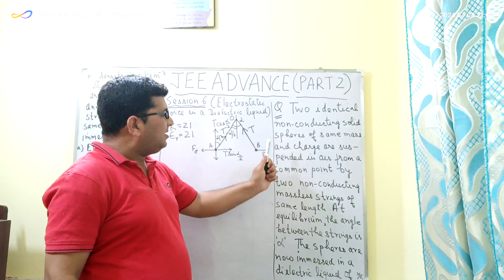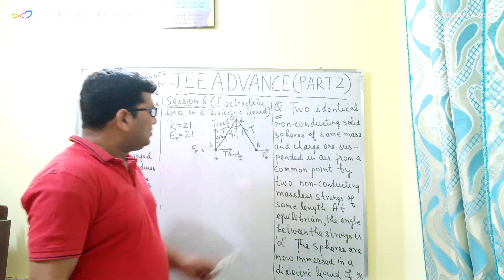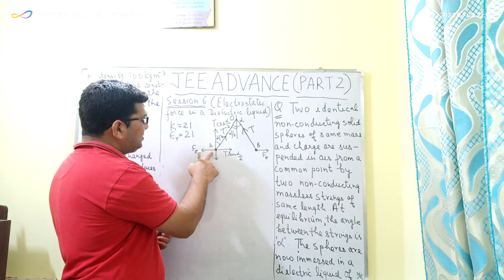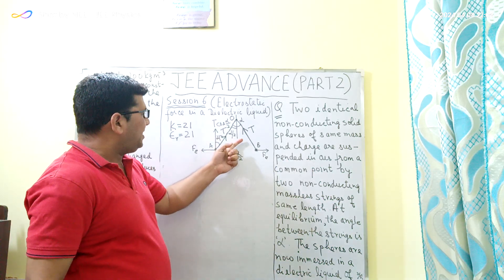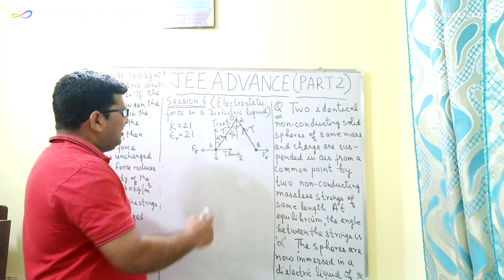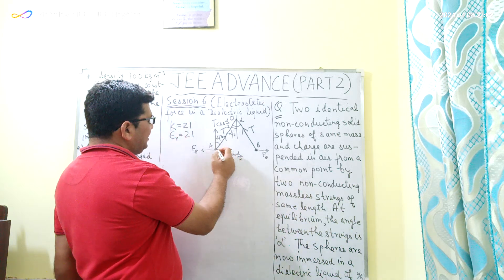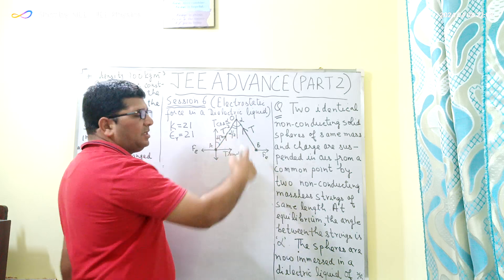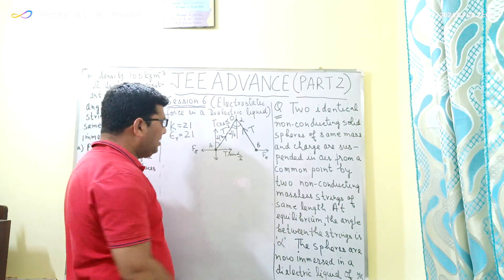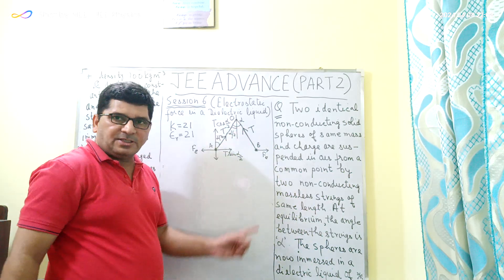The question: two identical non-conducting solid spheres of same mass and charge are suspended in air from a common point by two non-conducting massless strings of same length. I have already drawn a figure in which these two non-conducting spheres A and B are suspended from a common point. In the equilibrium state, the angle between the strings is alpha — that is angle AOB is alpha. Since the string lengths are equal and the mutual electrostatic force is the same, the angle made by each string with the vertical will be alpha by 2.